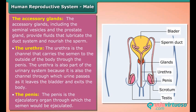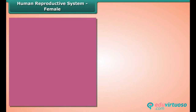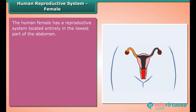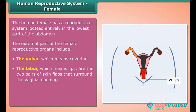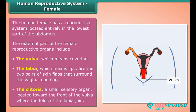The human female has a reproductive system located entirely in the lowest part of the abdomen. The external part of the female reproductive organs includes the vulva, which means covering; the labia, which means lips — the two pairs of skin flaps that surround the vaginal opening; and the clitoris, a small sensory organ located toward the front of the vulva where the folds of the labia join.